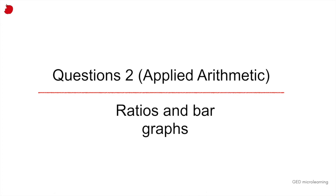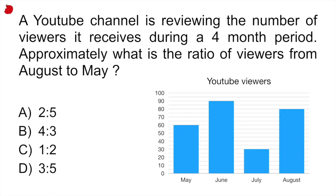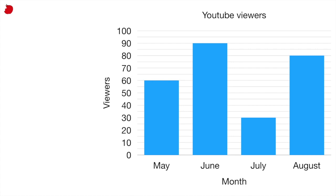Question two is an applied arithmetic problem. Here we're going to look at ratios and review bar graphs. So it says, a YouTube channel is reviewing the number of viewers it receives during a four-month period. Approximately what is the ratio of viewers from August to May? So before we go ahead and solve this question, first of all, let's review what it is like to look at a bar graph.